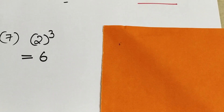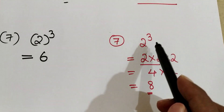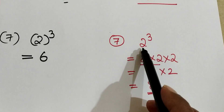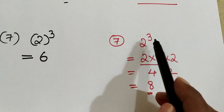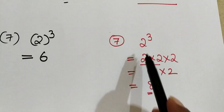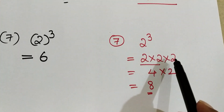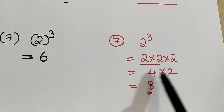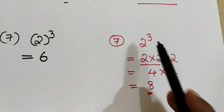The correct procedure: 2 cube means 2 into 2 into 2, where 2 is the base and 3 is the exponent or power. So 2 should be written 3 times: 2 times 2 is 4, then 4 times 2 is 8. So 2 cube value is 8, not 6.